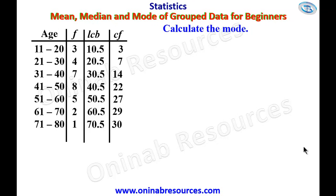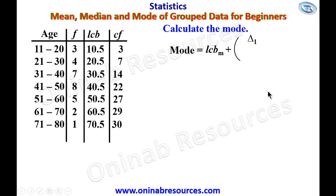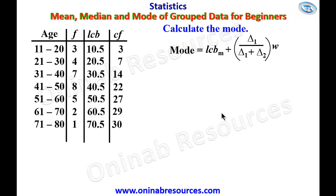Now we calculate the mode. The formula is: lower class boundary of the modal class, plus open bracket delta one over delta one plus delta two, multiplied by the class width. Delta one is the difference between the frequency of the modal class and the class before it (in ascending order). Delta two is the difference between the frequency of the modal class and the class after it. If arranged in descending order, you reverse the process.